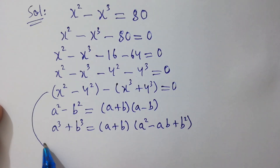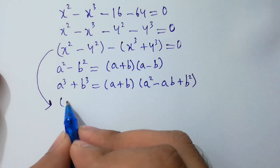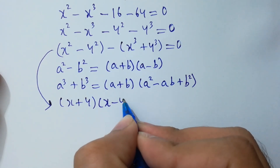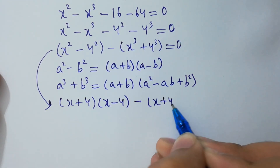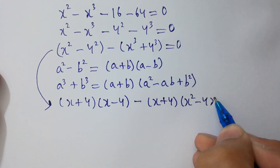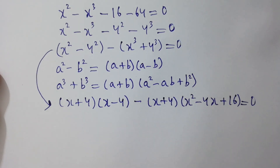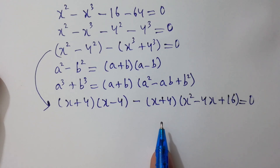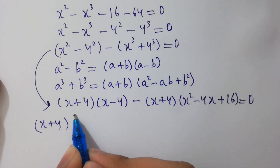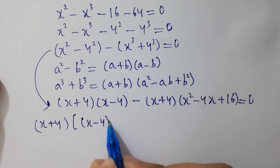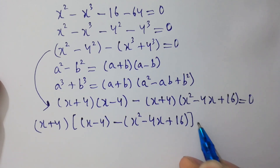So x squared minus 4 squared factors as (x plus 4)(x minus 4), and x cubed plus 4 cubed factors as (x plus 4)(x squared minus 4x plus 16). Since (x plus 4) is common to both terms, we factor it out: (x plus 4) times [(x minus 4) minus (x squared minus 4x plus 16)] equals 0.